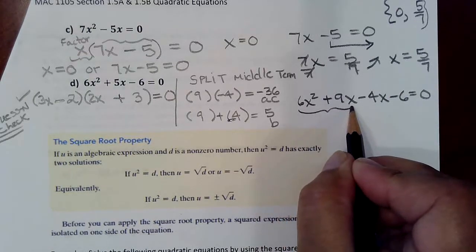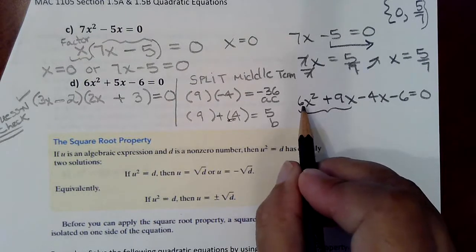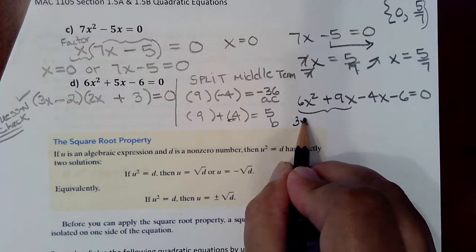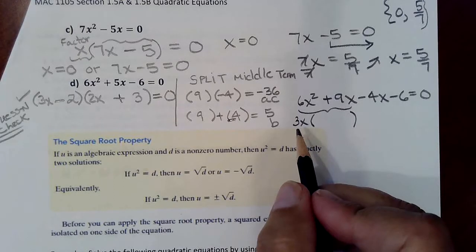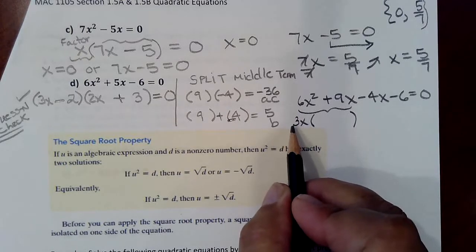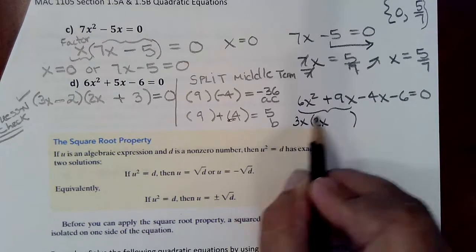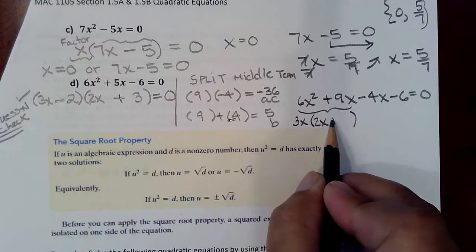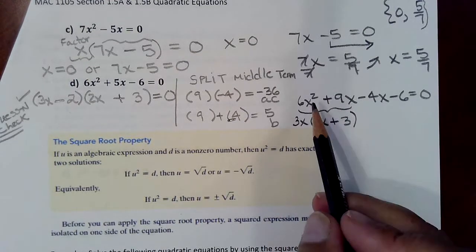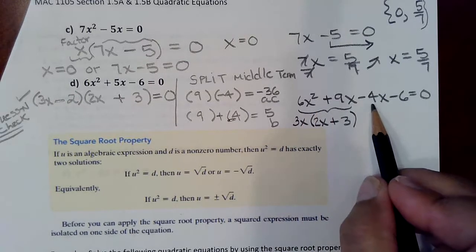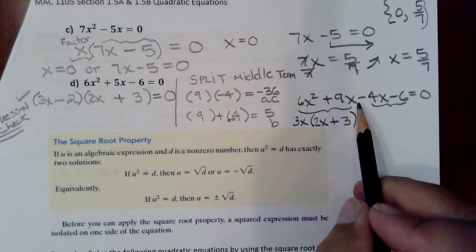So if you group these two together and ask what do they have in common, 3 divides into both of those, and they both have at least 1x. So you could pull out a 3x, put one parenthesis next to it, and ask yourself, what do I multiply 3x by to get back 6x squared? That would be 2x. What do I multiply 3x by to get the 9x back? That would be positive 3. And then once you're factoring the first two terms, group the back two terms and ask, what do these have in common?